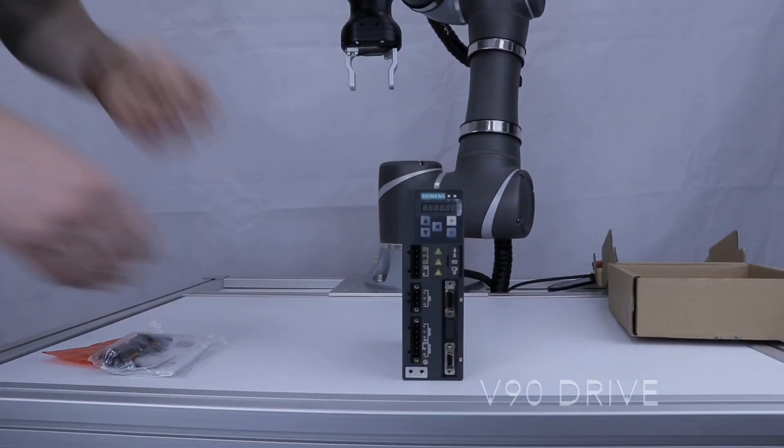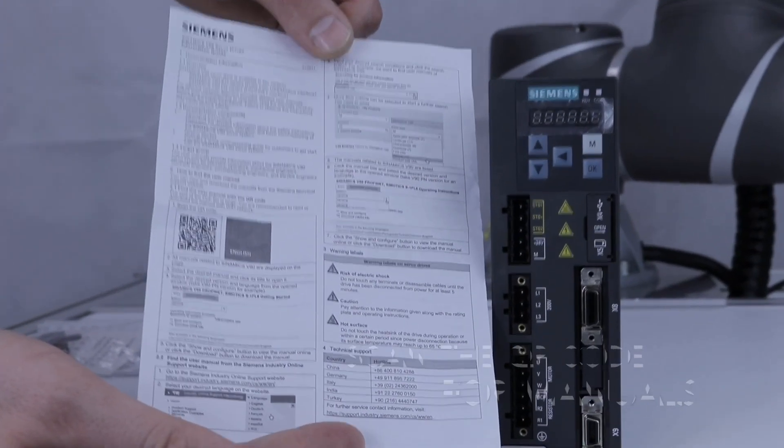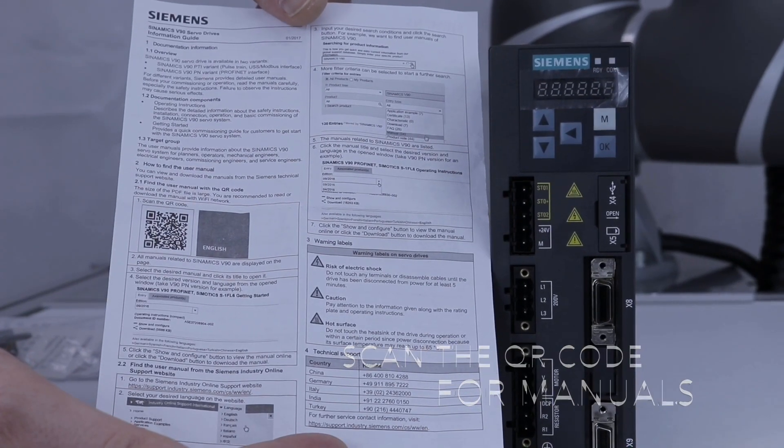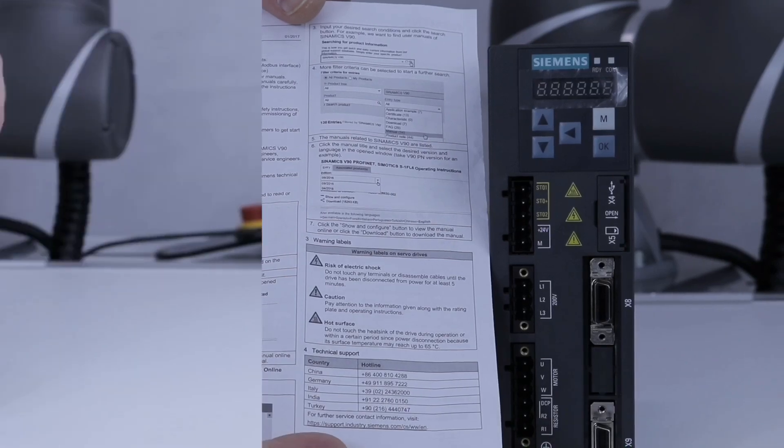The V90 is also available in a 400 volt or pulse train output variant. If you scan the QR code in the leaflet you'll be directed to the available V90 manuals on Siemens website. These manuals can also be found on our website, please see the link below.